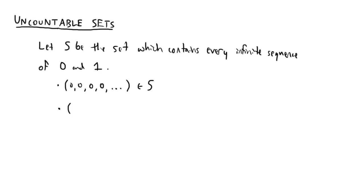Now, we still haven't seen any uncountable sets yet, so let's build one. Let S be the set which contains every infinite sequence of zeros and ones, and I mean every infinite sequence. The sequence of all zeros is in here, the sequence of all ones is in here, and any other combination you can think of is in S.